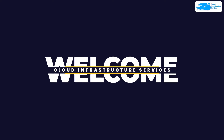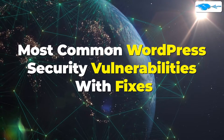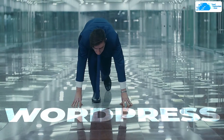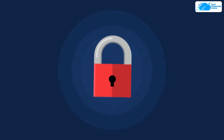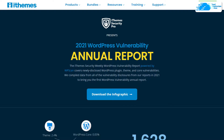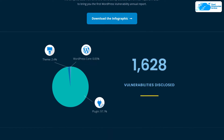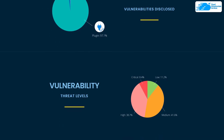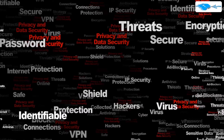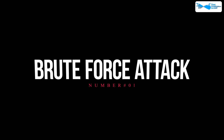Welcome to Cloud Infrastructure Services YouTube channel. In this video we are going to talk about the five most common WordPress security vulnerabilities along with their fixes. Even if WordPress is secure on a very basic level, like all other technologies available on the market today, WordPress has its own security vulnerabilities and threats which can highly affect your business. According to the annual WordPress report, more than 16,128 vulnerabilities were found in only 2021, so you should be wary of these commonly known security threats.